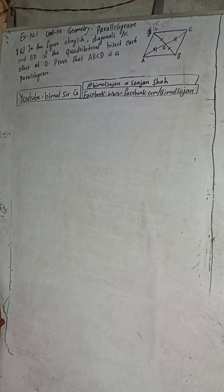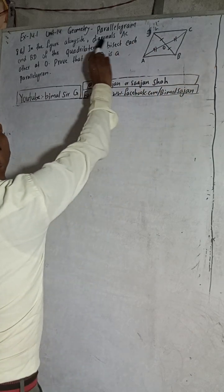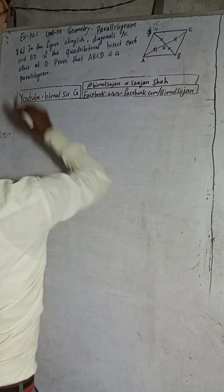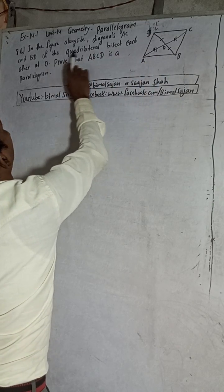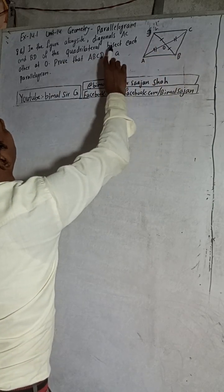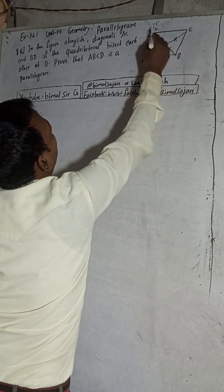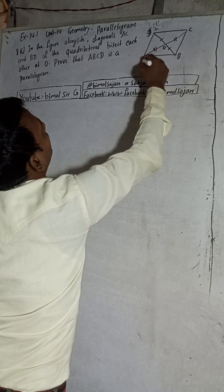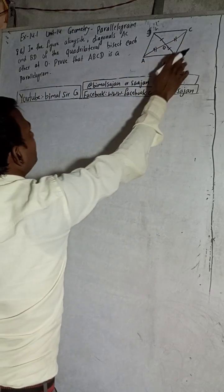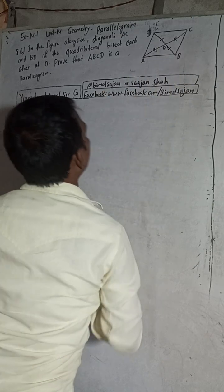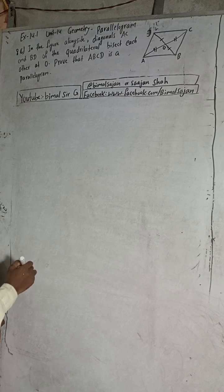8C question: in the figure alongside, diagonals AC and BD of this quadrilateral ABCD bisect each other at O. Bisect means OD is equal to OB and OA is equal to OC. We have to prove that ABCD is a parallelogram.